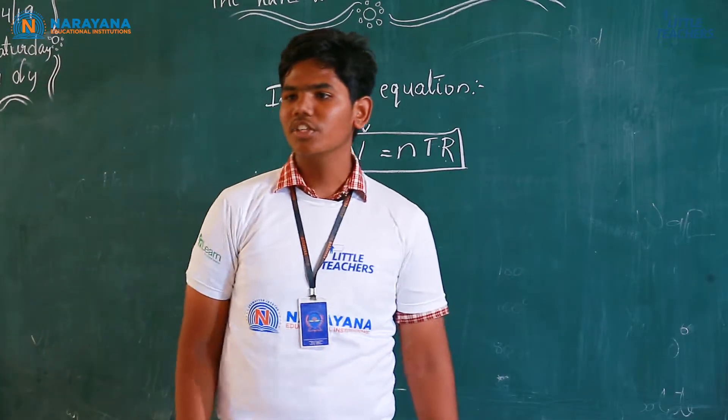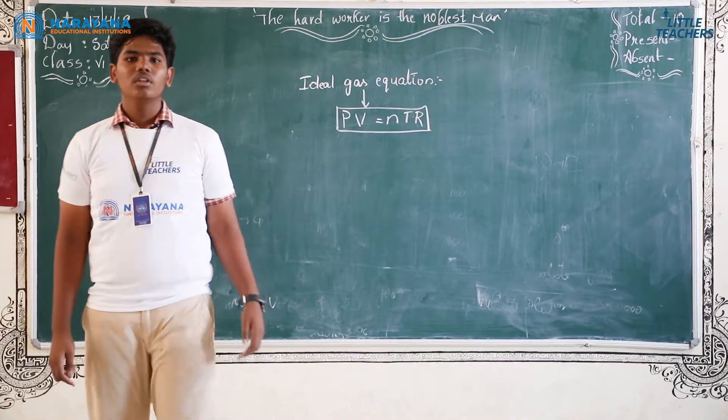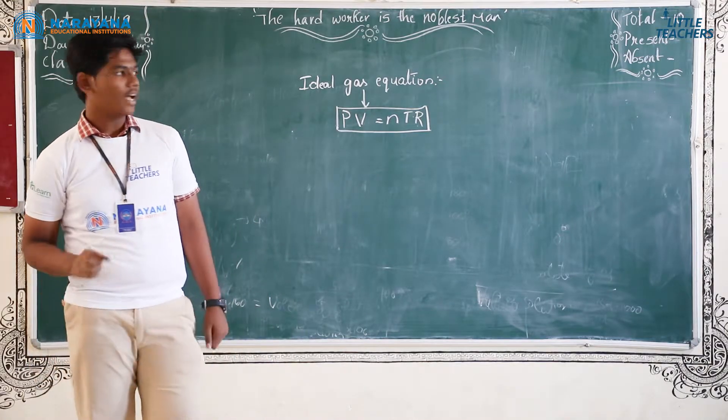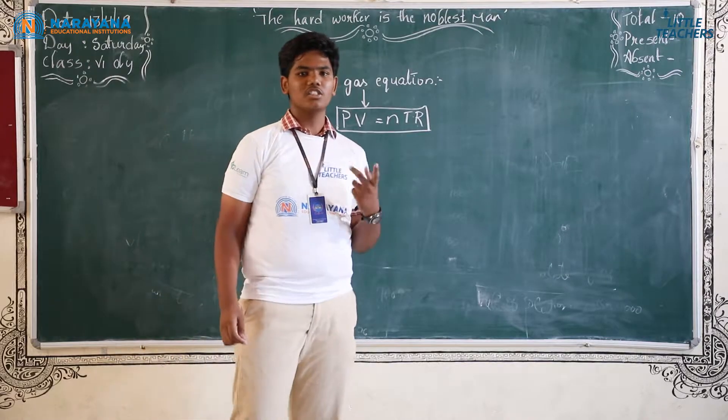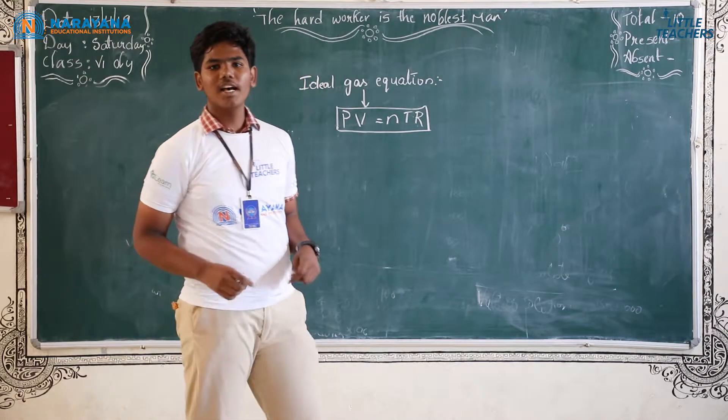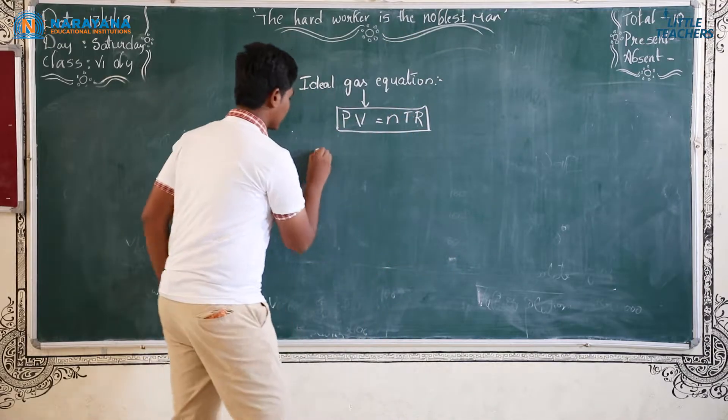The gases which obey all the gas laws of general gas equation is called ideal gases. There are three types of gas laws. They are Boyle's law, Charles' law and Avogadro's law. First one,